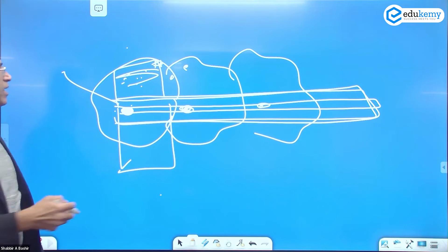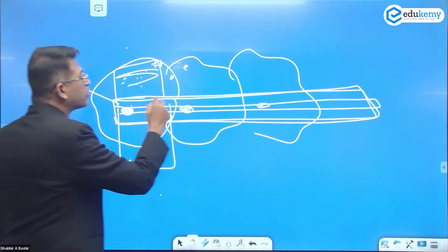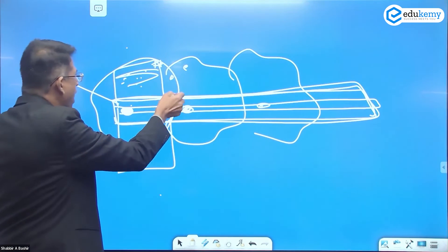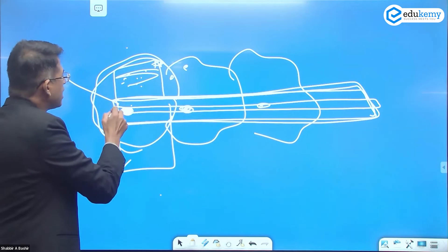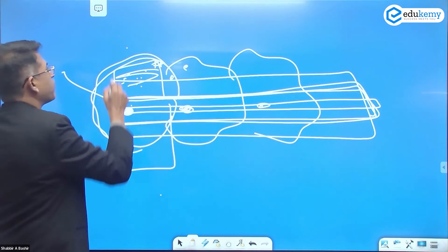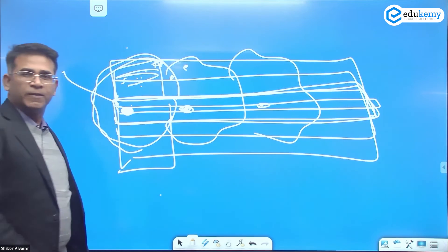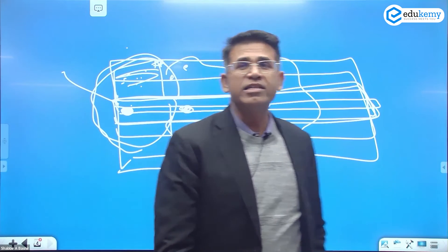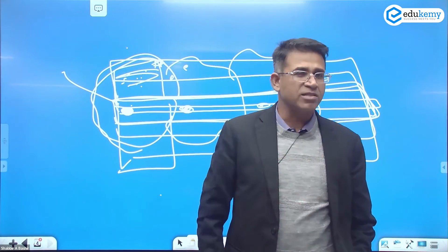Planning and development should not be limited to the planned area alone — it should be part of this larger area because it is continuous. That is why conurbations are increasingly seen as some kind of metropolitan areas.